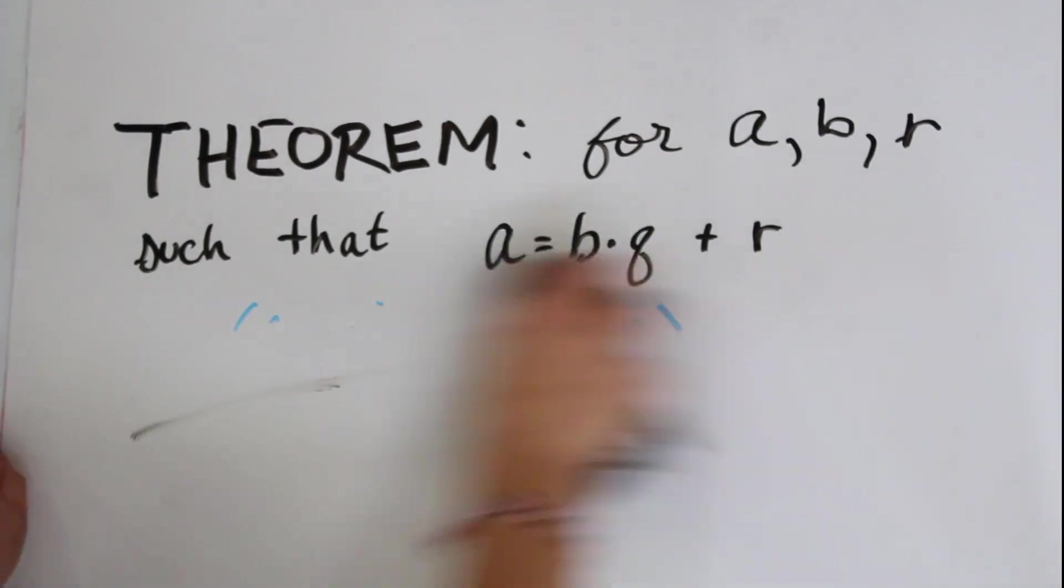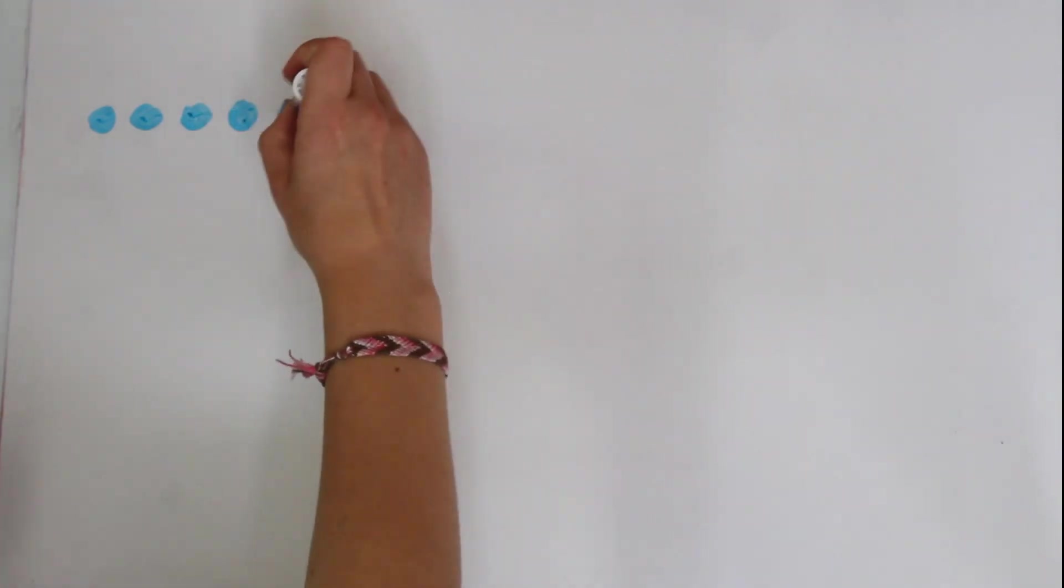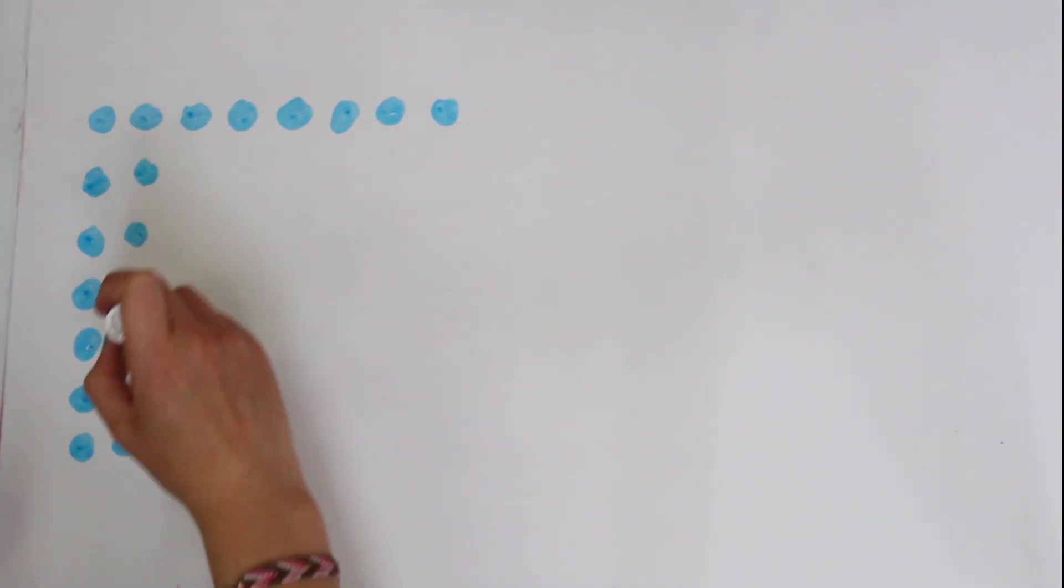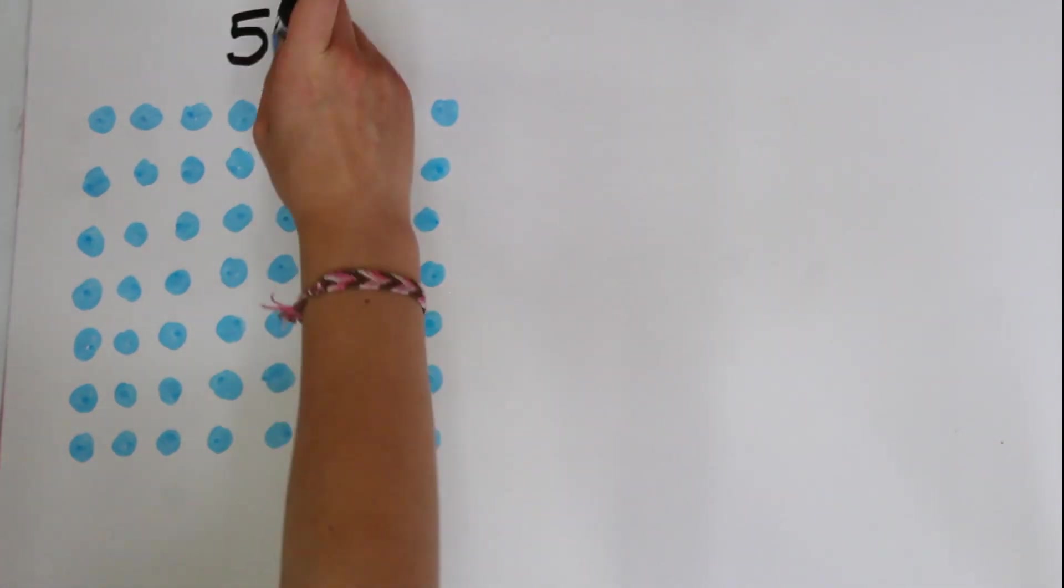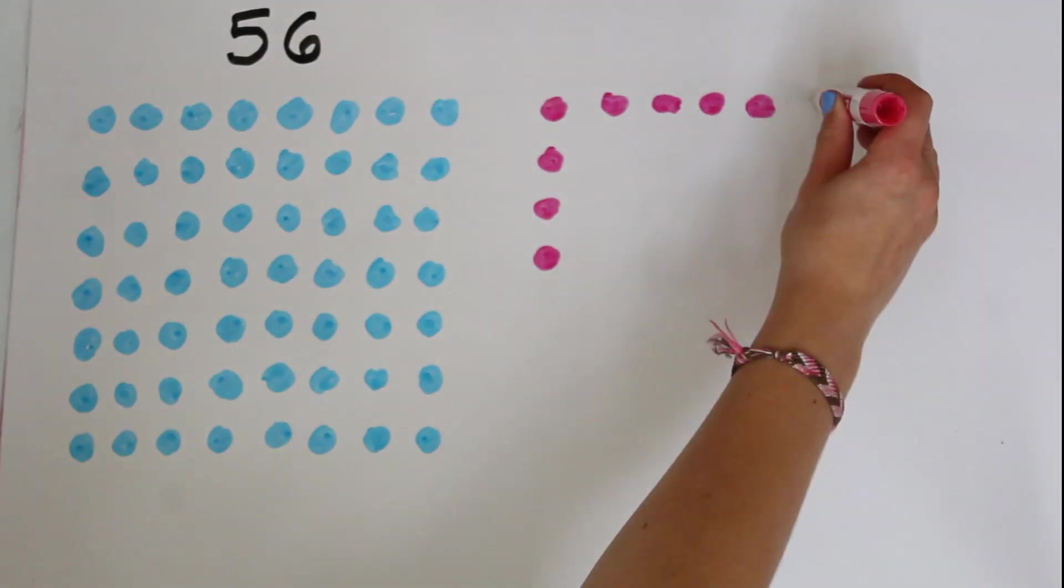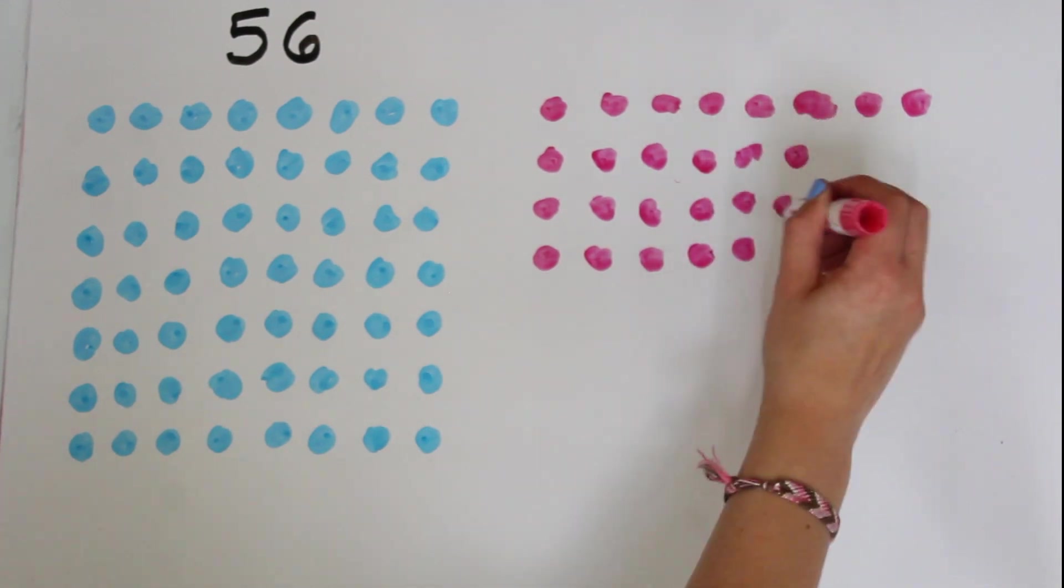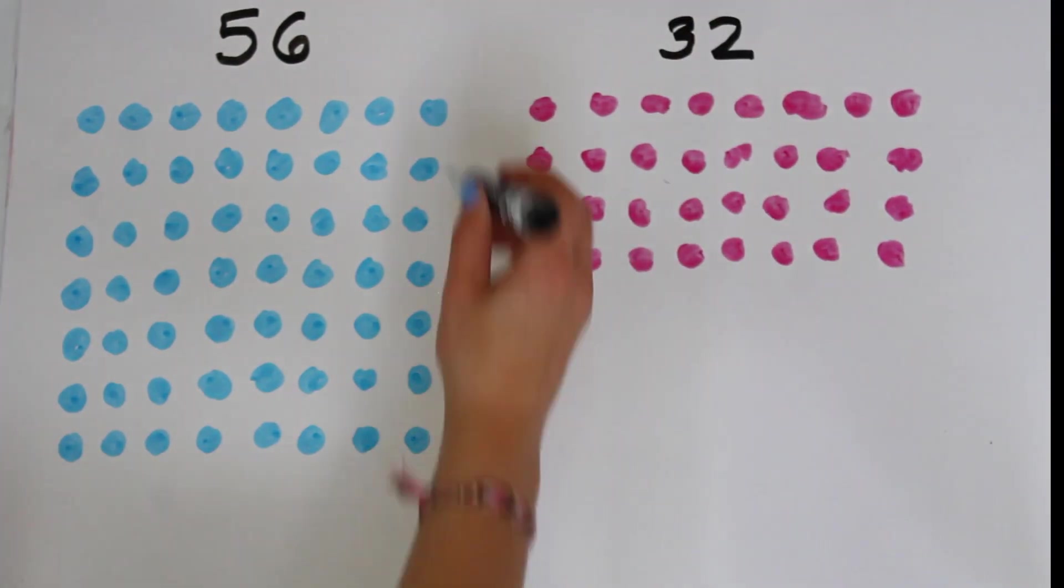I'm going to be showing a visual proof. There's an algebraic one too, but I find this one helps me understand it better. So let's take, for example, that A = 56 and B = 32. Here, I'm drawing an array to represent each of them, and the number of columns is the greatest common divisor.